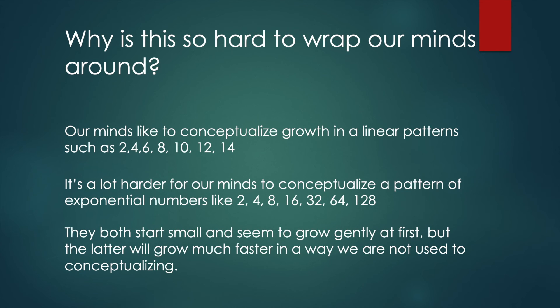Our minds prefer linear growth like 2, 4, 6, 8, 10, 12, 14. It's a lot harder to conceptualize a pattern of exponential numbers like 2, 4, 8, 16, 32, 64, 128. Both series start out small and seem to grow gently at first, but the latter will grow much, much faster and in a way that we are not used to thinking about.